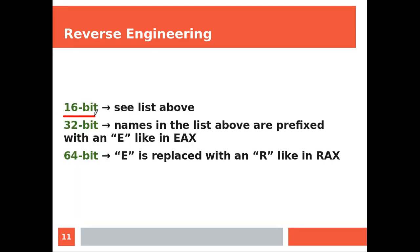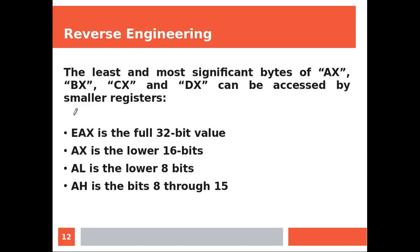These registers are all 16 bits wide. To get the 32 bits one, you need to append the E in front of the original name. And to get the 64 bits one, you need to append the R in front of the original name. The least and most significant bytes of AX, BX, CX and DX can be accessed by smaller registers. So for example, AL is the lower 8 bits of AX and so on.